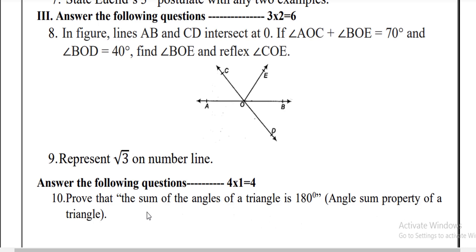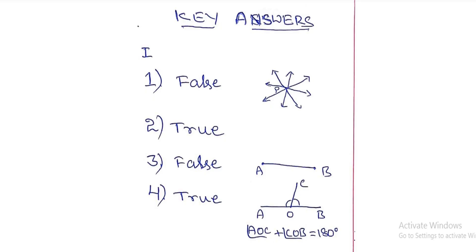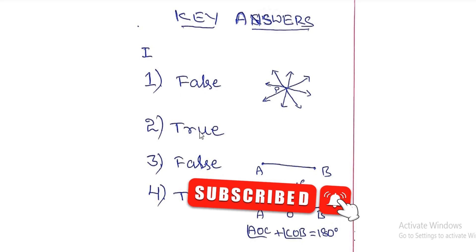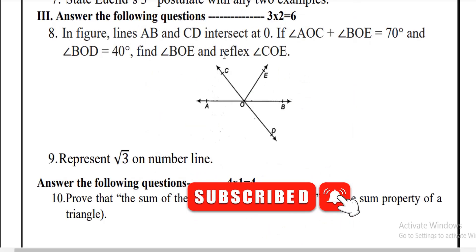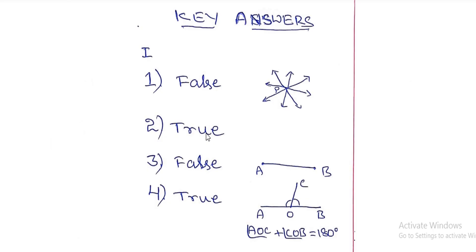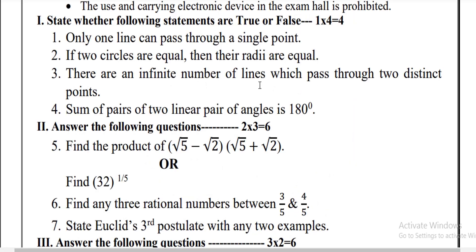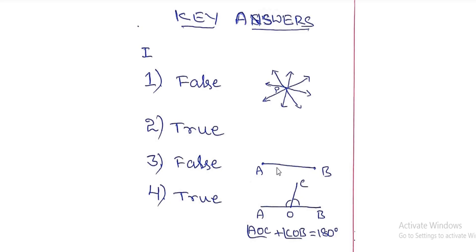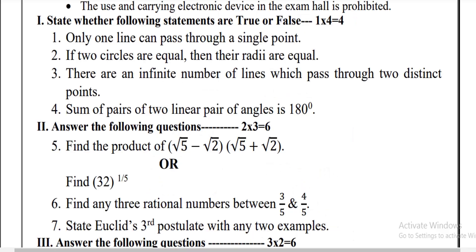That is the angle sum property of the triangle — prove that theorem. Now the first true/false answer is false, because you can observe there are so many lines drawn at one point. The second question is true: if two circles are equal then their radii are equal. The third one — there are an infinite number of lines which pass through two distinct points — is false, because along with two distinct points only one straight line can be drawn.